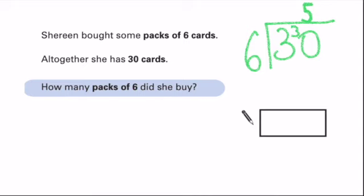So if he buys 6 packs and each one has got, sorry, he buys 30 cards. Well, if we work out, if we count in 6s, 6, 12, 18, 24, 30. That's 5, so he buys 5 of those packs.